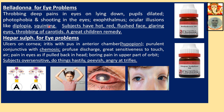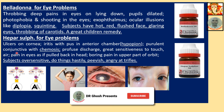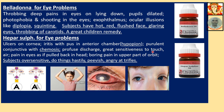Hepar Sulph for eye problems: ulcerated cornea, iritis with pus in the anterior chamber (hypopion), purulent conjunctivitis with chemosis — swelling of the eye making it difficult to open. Profuse discharge. Great sensitivity to touch and air. The characteristic feature of Hepar Sulph is that the patient cannot tolerate touch, air, or wind. Pain in the eyes as if being pulled back; boring pain in the upper orbit (the bony structure where the eye is set). Subject is oversensitive, does things hastily, peevish, and irritable.